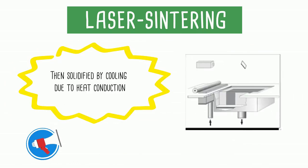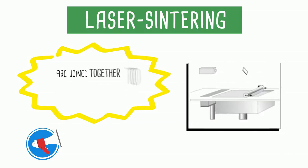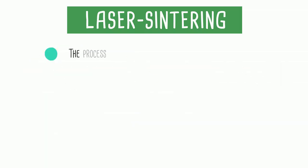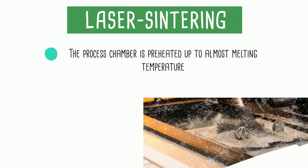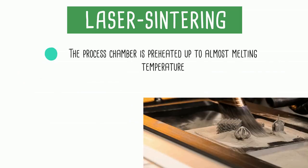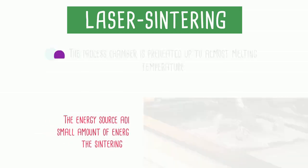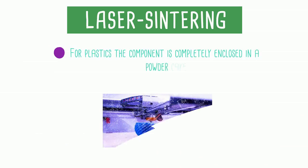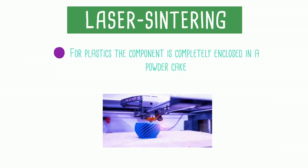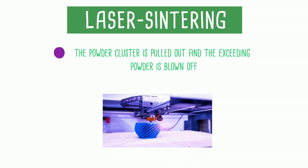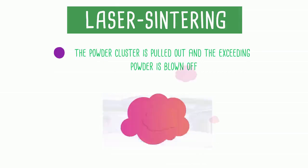The particles are solidified by cooling through heat conduction and joined together to form a firm layer. The process chamber is preheated to almost melting temperature; the energy source adds only a small amount of energy for the sintering. For plastics, the component is completely enclosed in a powder cake. The powder cluster is then pulled out and the excess powder is blown off.